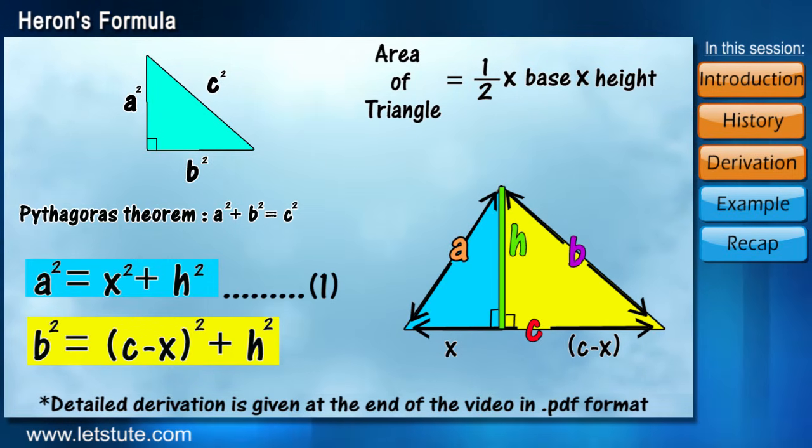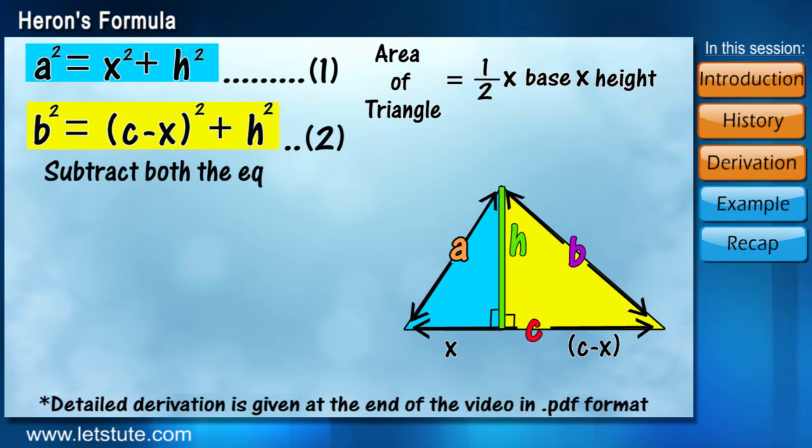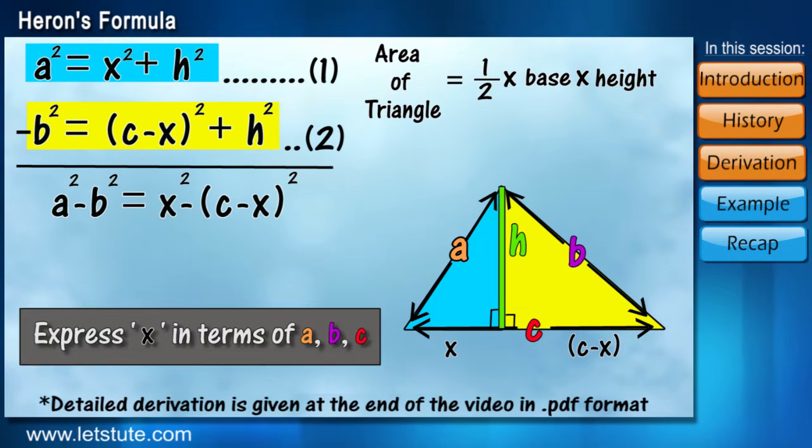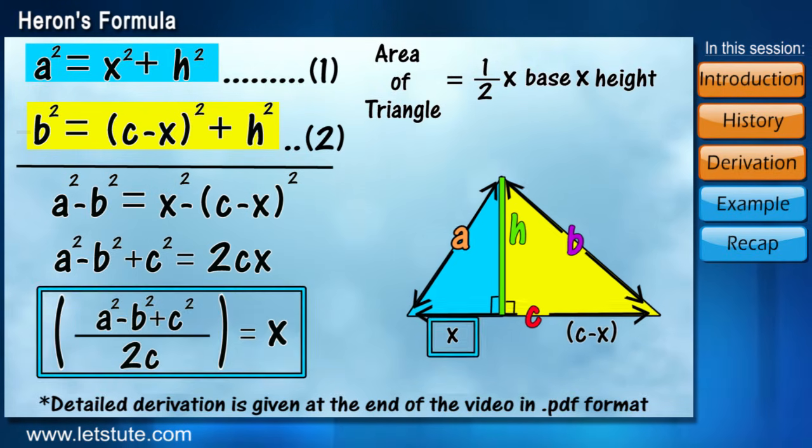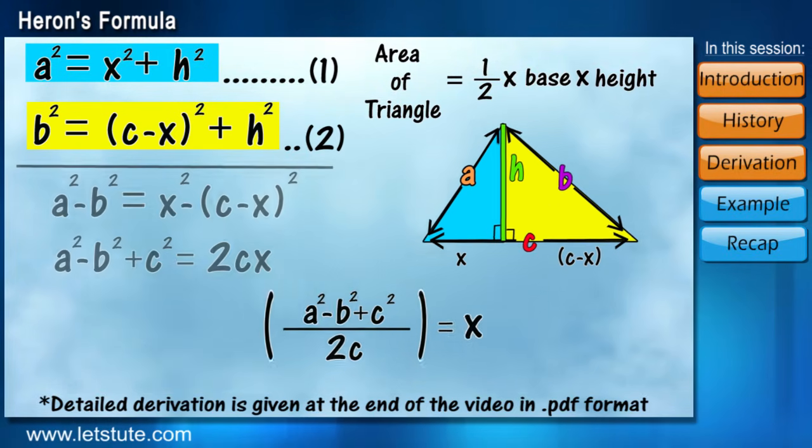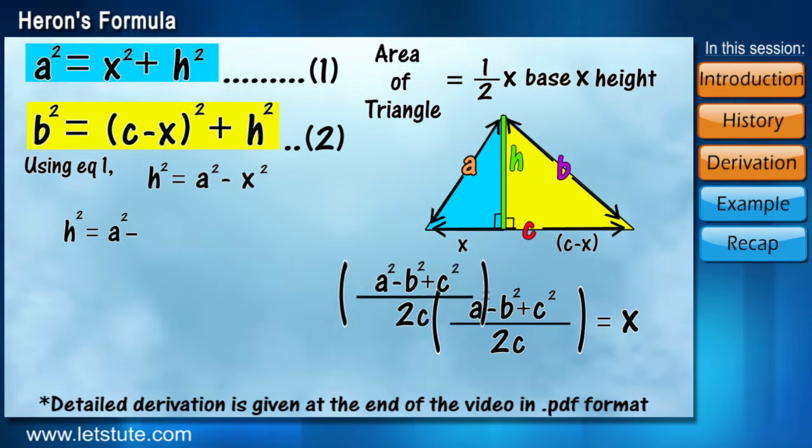Now, we have equation 1 and 2. Let's subtract both the equations and get the value of x in terms of a, b, and c. Now, using equation 1, we can also get the value of h.